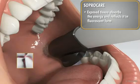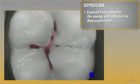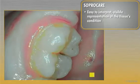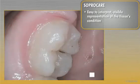Images obtained through fluorescence analysis are superimposed over the anatomic images, creating an easy-to-interpret and visible representation of the tissue's condition, which is otherwise invisible under white light.